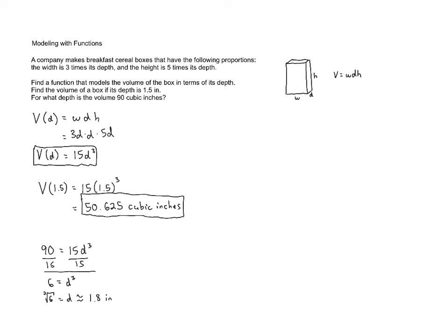So if we want to create a cereal box that has a volume of 90 cubic inches, perhaps we've learned that that's the amount of cereal that a family wants each week or something like that, then we need to create the box so that the depth is 1.8 inches.